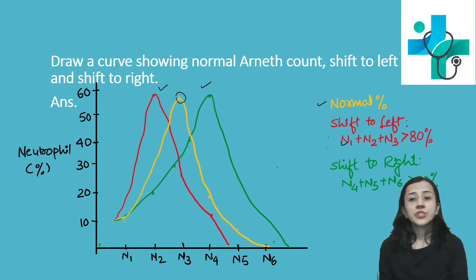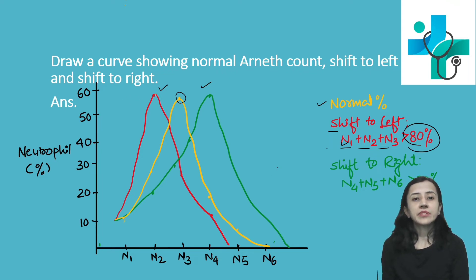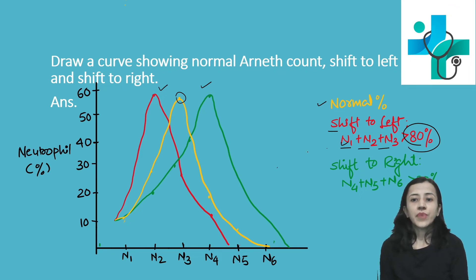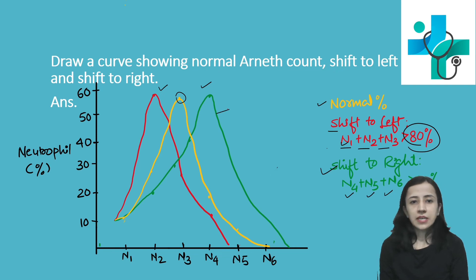Now, what is shift to left? When the cumulative percentage of N1, N2, and N3 is more than 80%, this is known as shift to left — depicted here in red color. Shift to right is when the cumulative percentage of N4, N5, and N6 is 20%, and that is shown in green color.